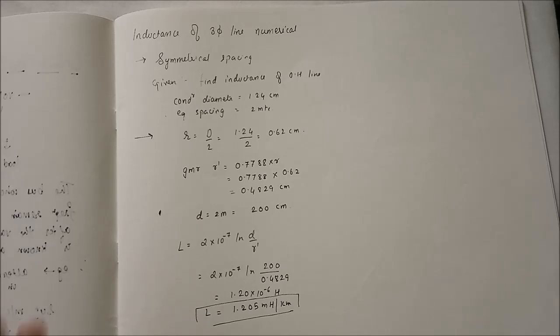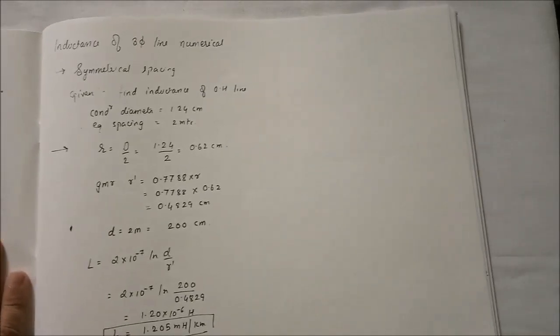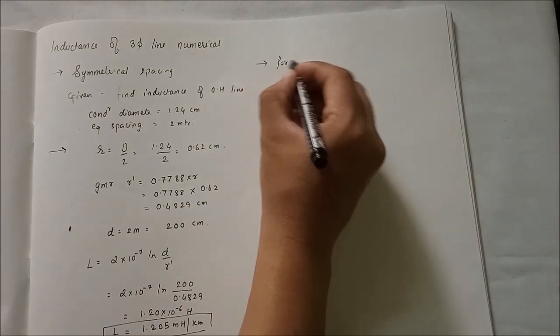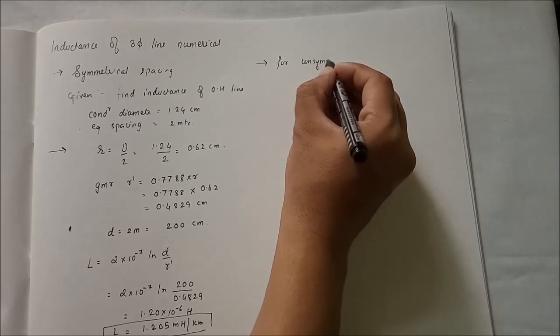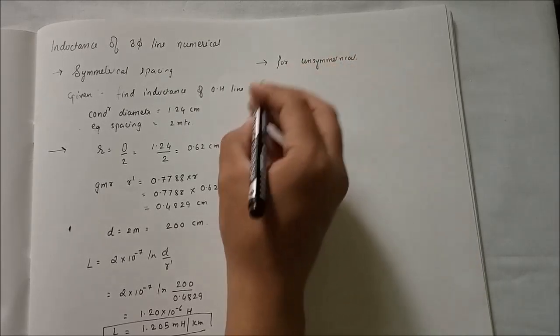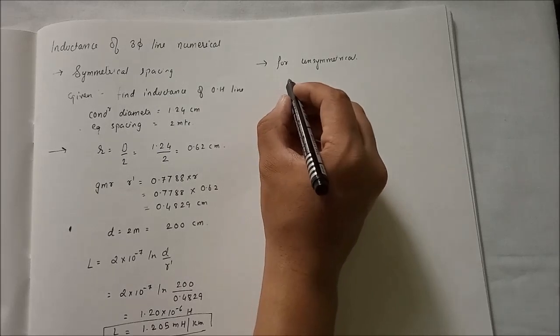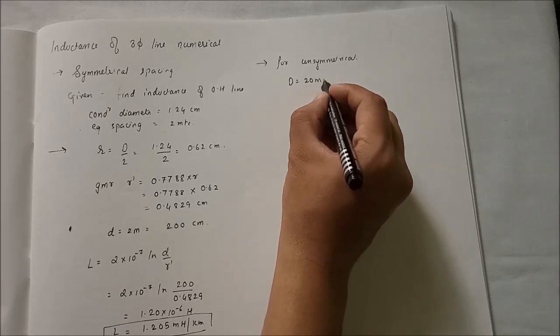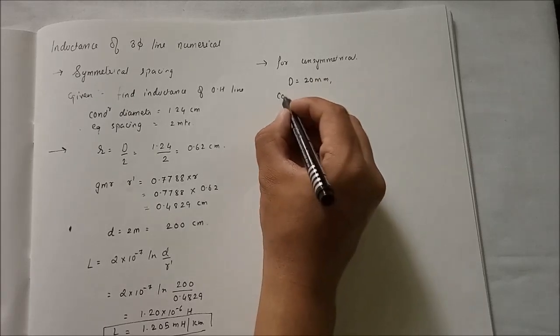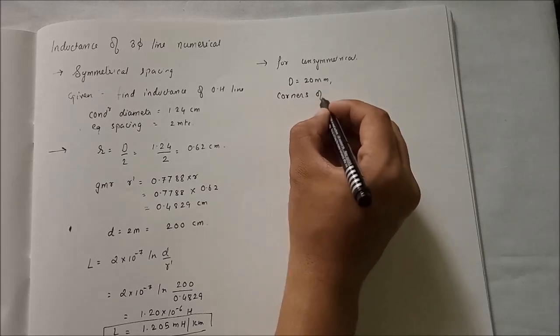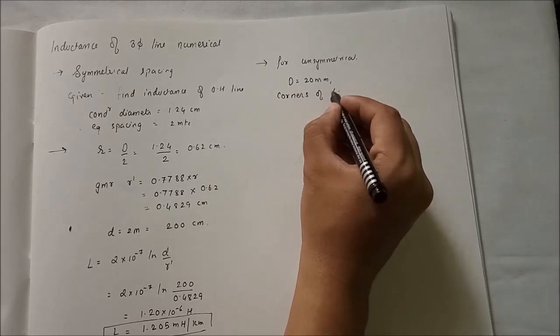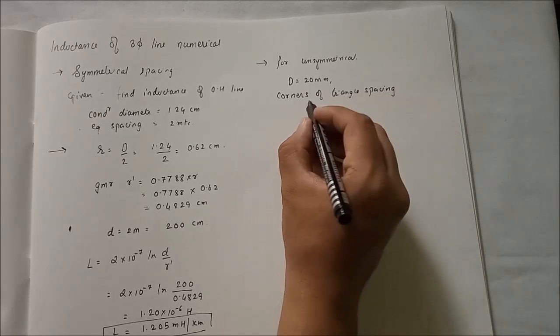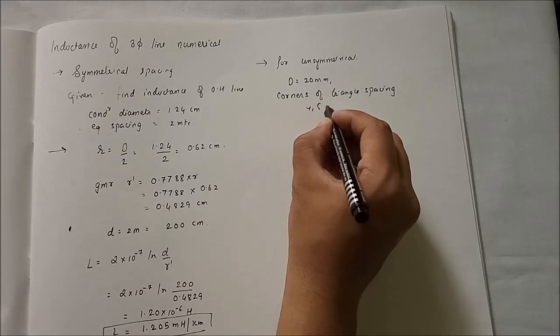Now we will solve for the unsymmetrical spacing. The numerical is given as diameter is equal to 2.20 mm. Corners of the triangle is given as 4, 5, and 6 meter.